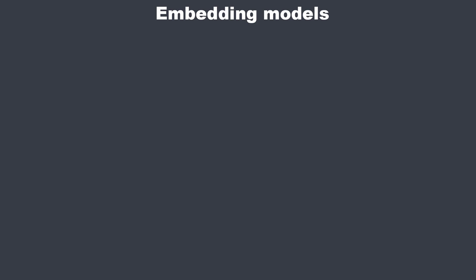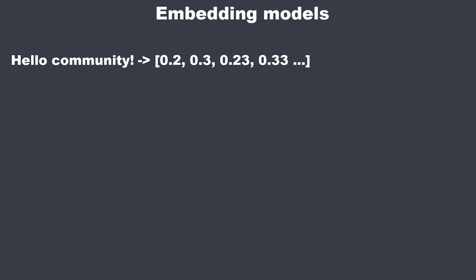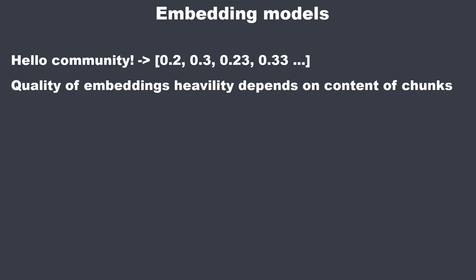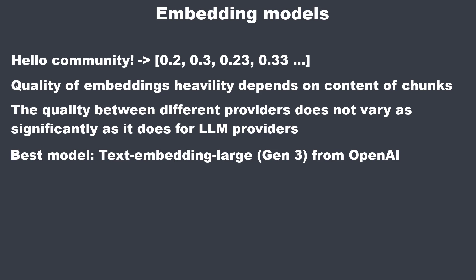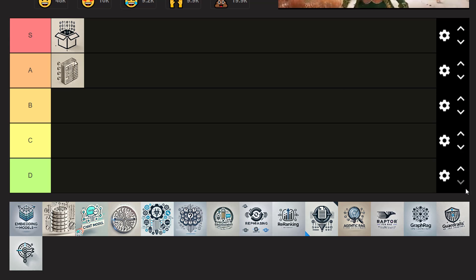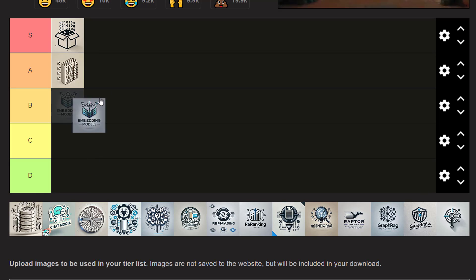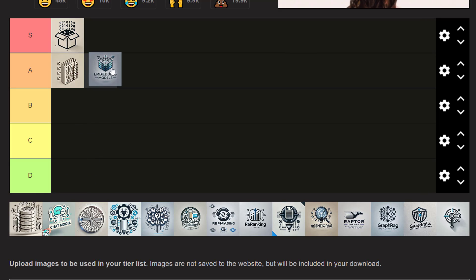The next topic is embedding models. An embedding model converts text into vectors representing the semantic meaning of the content. The quality of embeddings directly impacts how well the system can understand and retrieve relevant information. I tried open source models and the second and third generation OpenAI models, with best results from the newer OpenAI models. Embedding models are often underrated and neglected — I'd put them in B tier.